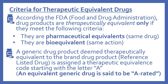Now we'll look at the criteria for therapeutically equivalent drugs. According to the FDA — the Food and Drug Administration — drug products are therapeutically equivalent only if they meet the following criteria: they are pharmaceutically equivalent, meaning they're basically the same drug in active ingredient, amount, route, and dosage form; and they are bioequivalent, meaning they have the same action, same rate, and extent of absorption. A generic drug product deemed therapeutically equivalent to the brand — known as the reference listed drug — is assigned a therapeutic equivalence code starting with the letter A. So an equivalent generic drug is said to be A-rated.